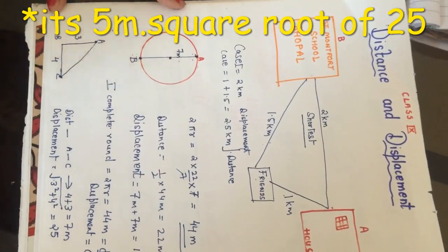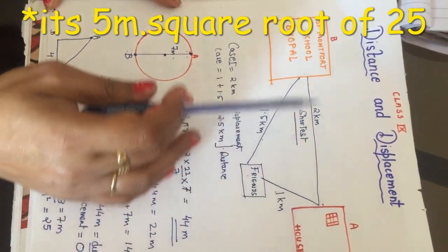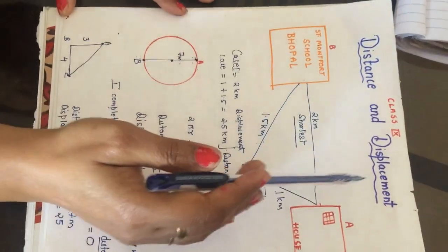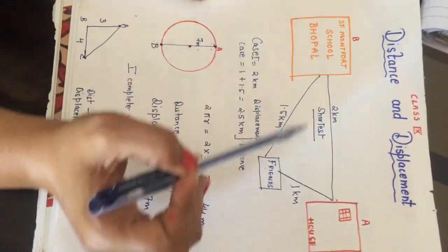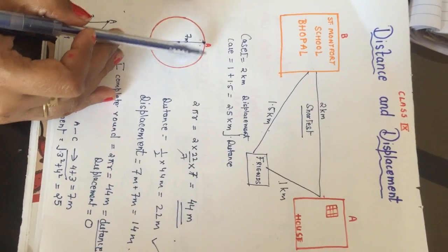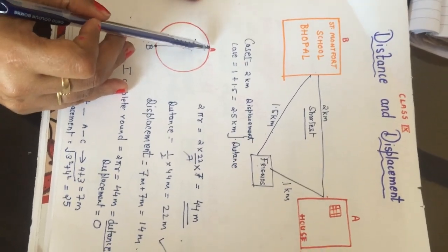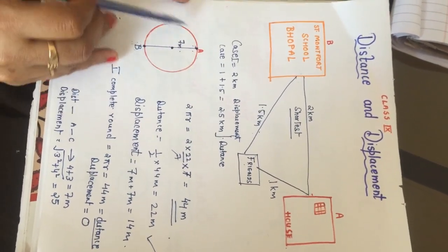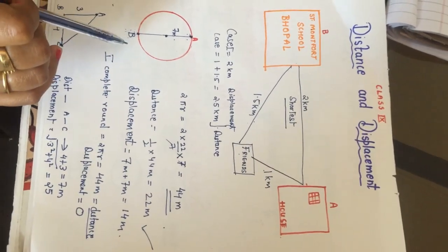So to summarize: distance is the length of the path covered and is a scalar quantity — no direction is associated with it. Displacement is the shortest distance between two points and is a vector quantity, as direction matters. Distance cannot be zero when two distinct points are given, but displacement can be zero — as we saw when the distance traveled was 44 meters but displacement was 0, since start and end points were the same.